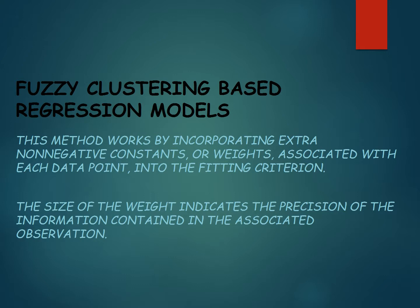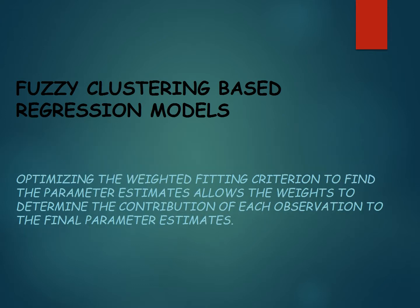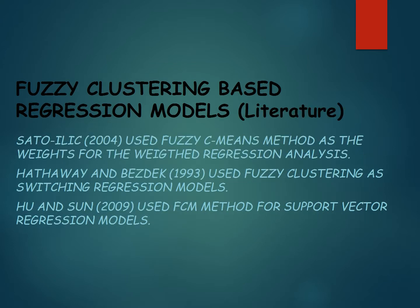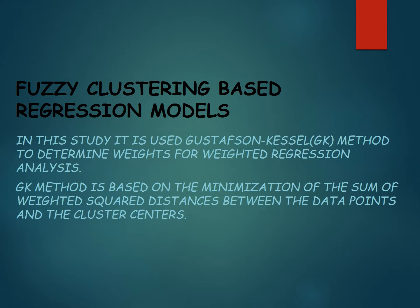Fuzzy clustering based regression models work by incorporating weights associated with each data point into the fitting criterion. The size of the weight indicates the precision of the information contained in the associated observation. As we look at the literature, Sato-Ilich used the fuzzy C-means method as weights for weighted regression analysis; Hedoyan-Belzak used fuzzy clustering as switching regression models; and Huan-Tsun used the FCM method for support vector regression models. In this study, the Gustafson-Kessel method is used to determine weights for weighted regression analysis, based on minimizing the sum of weighted distances between data points and the clusters.